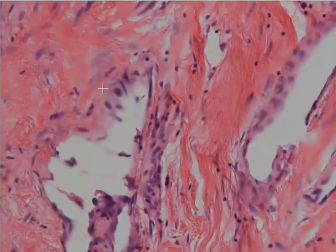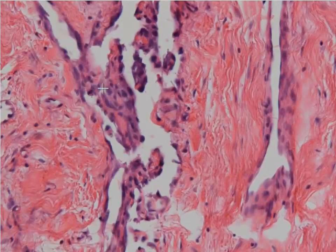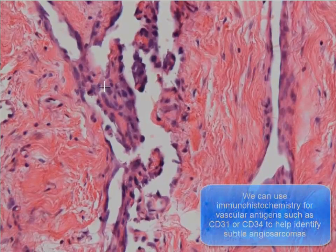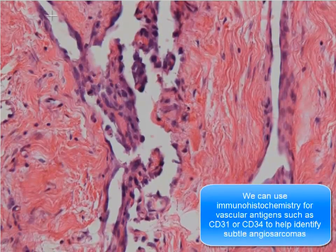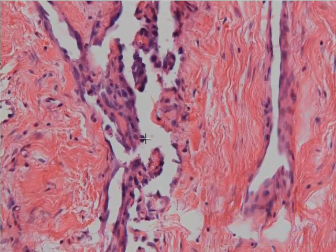Some of the features that we look for to help us with the diagnosis of angiosarcoma are atypical endothelial cells. When you look at the vascular spaces, you see that there are irregular and dark nuclei. A lot of them tend to pooch out into the lumen of the blood vessel, and you'll also have mitotic figures.